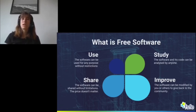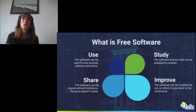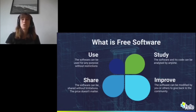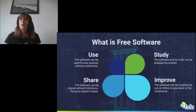To study means you can study the software and analyze how the software works, look at the code, and understand what the software does. To improve means you can improve the software — and of course this includes fixing bugs, but this also includes modifying the software and adapting it to your specific needs. For example, you could add a small or large feature to a software and adapt it to your specific situation.